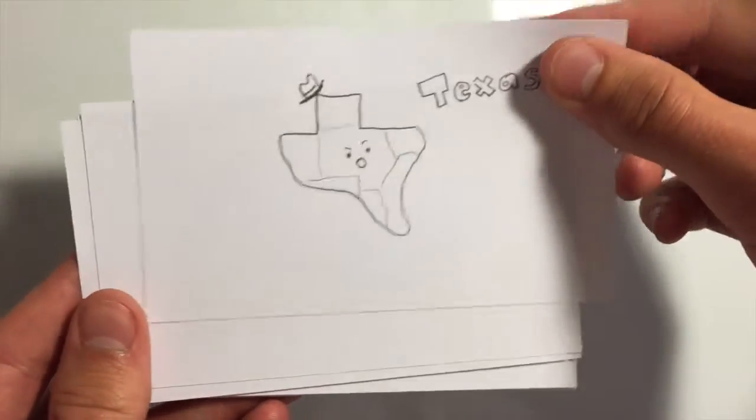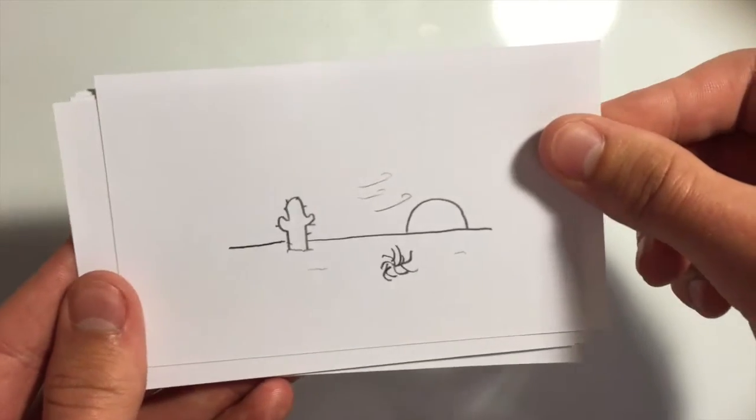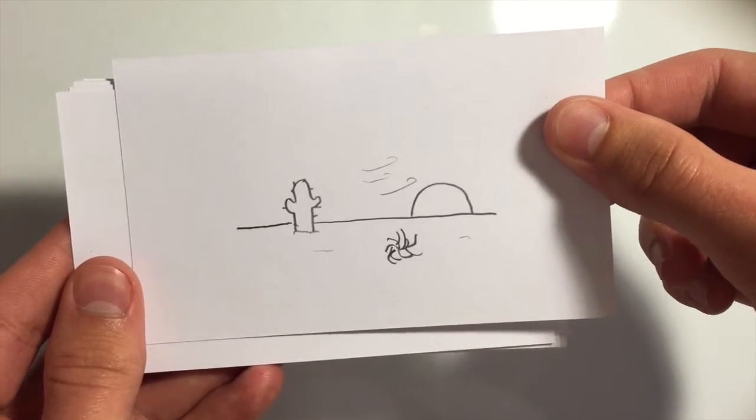Now, here in Texas, we have many unique ecosystems, and the one we are best known for is our desert and plains-like environments.